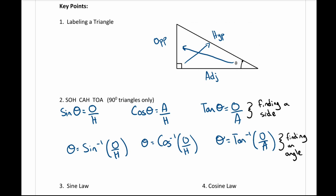The idea of sine = opposite over hypotenuse, cosine = adjacent over hypotenuse, and tan = opposite over adjacent comes from the acronym SOHCAHTOA, which you can use to help you remember. Again: sine is opposite over hypotenuse, cosine is adjacent over hypotenuse, and tan is opposite over adjacent. You do get to use your notes, so you can always look back through this.